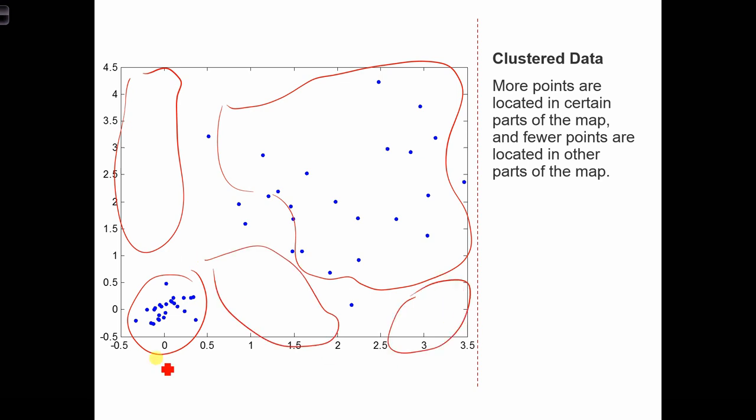So if you've got areas of the map with a lot of points, and then areas of the map with no points or with very few points, that's probably evidence that you've got a clustered pattern.